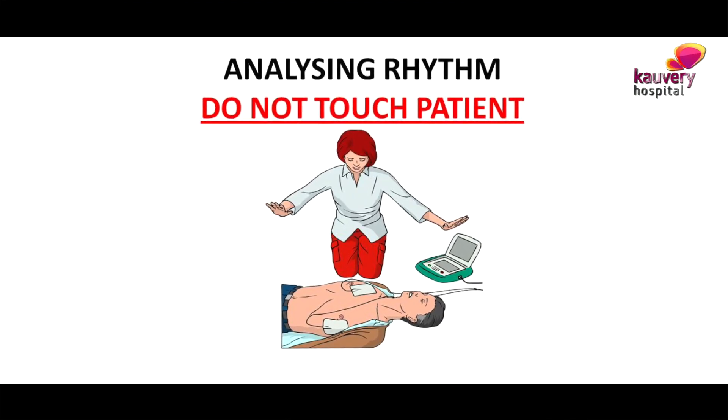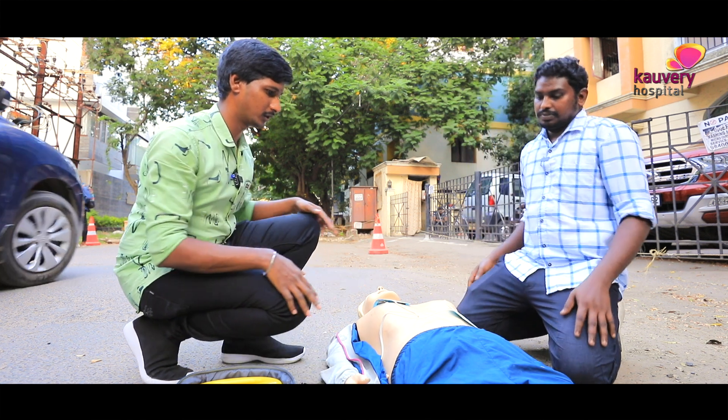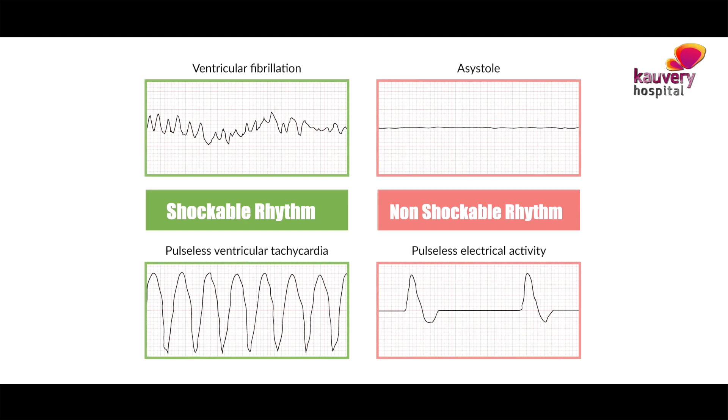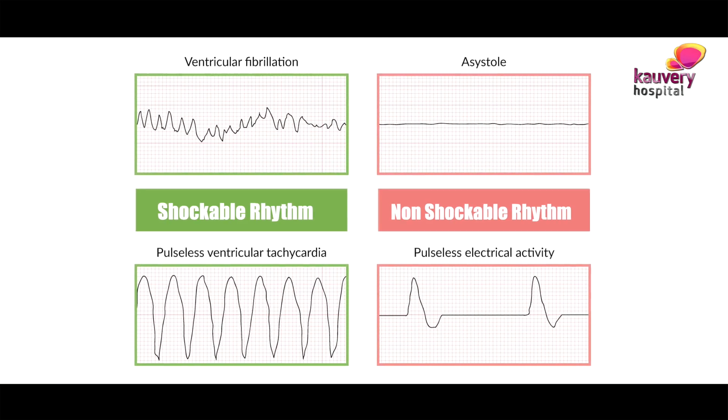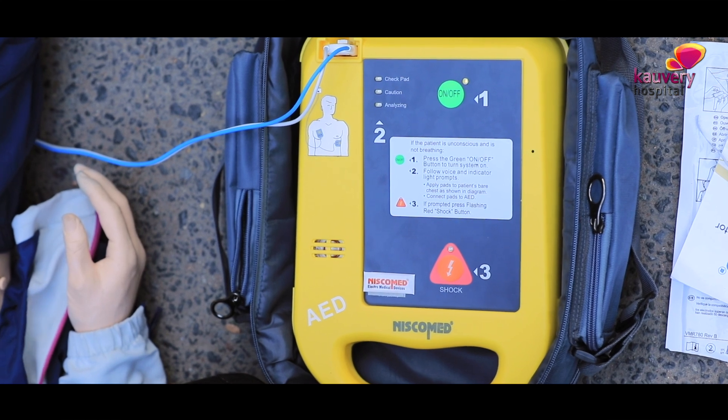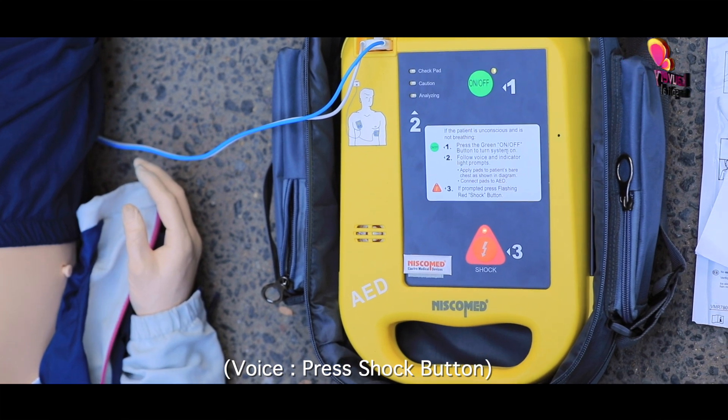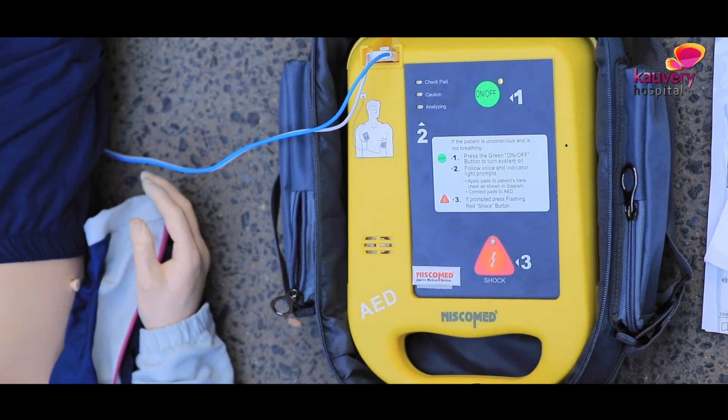The machine will say: Analyzing rhythm — please do not touch the patient. At that time, you must not touch the patient; stop CPR and cardiac massage so the machine can analyze the heart rhythm. There are two types of heart rhythm: one is a shockable rhythm and one is a non-shockable rhythm. If there is a shockable rhythm, the machine will say 'Shock is advised — press the shock button.' Press the flashing shock button. When the shock is delivered, the machine will prompt you saying: please resume CPR.